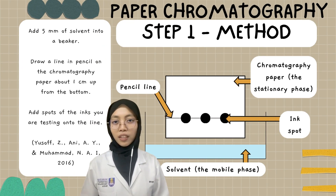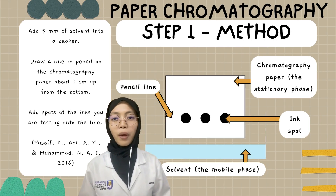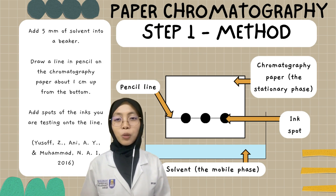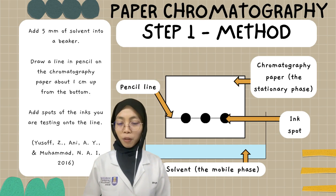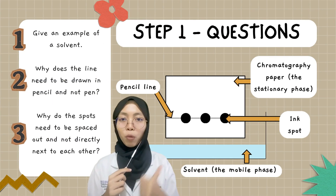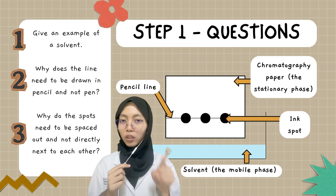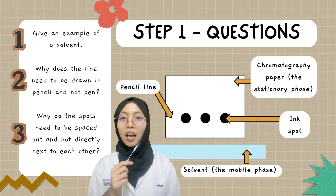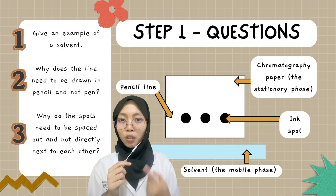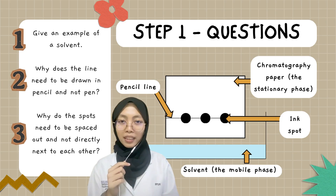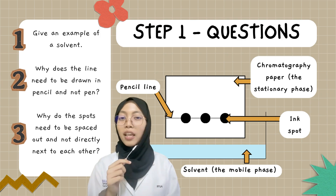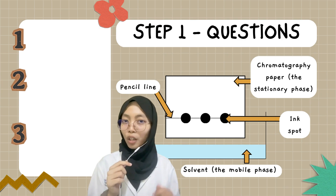Here is the methodology for paper chromatography. Step one: add 5ml of solvent into the beaker, then draw a line with a pencil on chromatography paper about 1cm up from the bottom, and put the ink onto the line. The solvent used can be water or ethanol. The line must be drawn with a pencil, not a pen, because pen ink contains soluble inks that can contaminate the ink spots. Ink spots must have space between them so they don't merge together, making the result hard to read.